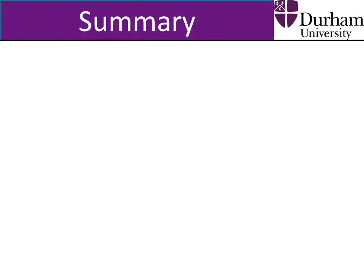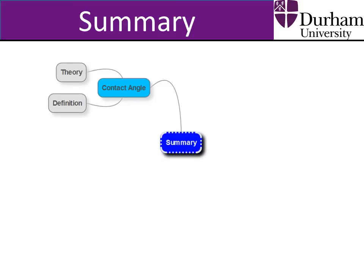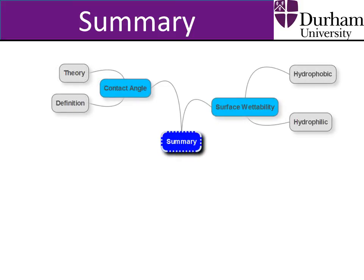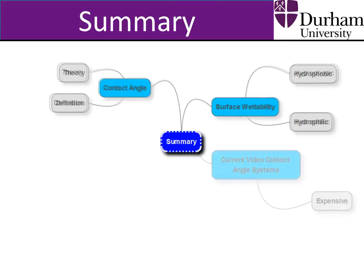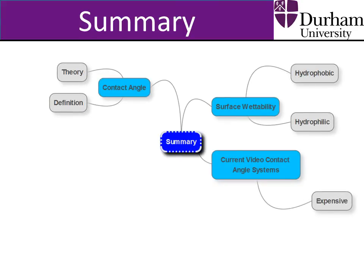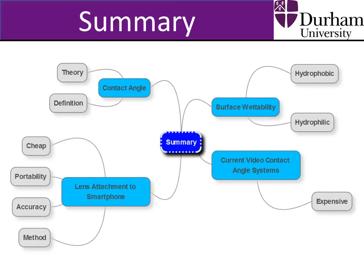In this video, we have looked at the theory and definition of droplet contact angles, as well as how contact angle is used to characterise the wettability of a surface. We have also looked into how contact angle is currently measured using video contact angle systems. We have then explored, in detail, an alternative system of contact angle measurement using a smartphone and a lens attachment that is compact, portable, and at least 10 times cheaper than currently used video contact angle systems.